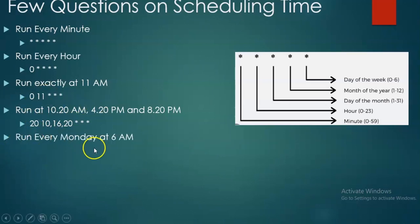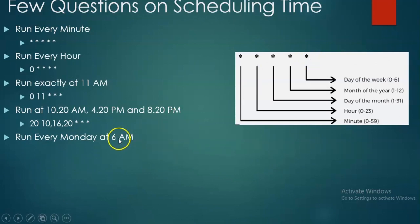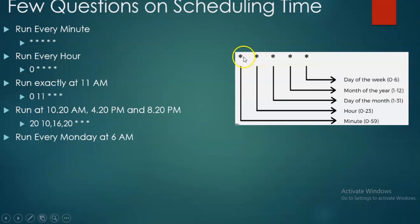I need to run every Monday at 6 AM. Days of the week: zero means Sunday, one means Monday. So here we put 1 for the weekday field. Six AM means 6 in the hours field. Zero for minutes. The syntax is: 0 6 * * 1. One means Monday, zero means Sunday.